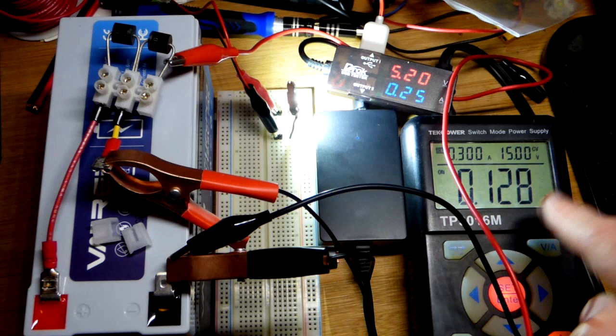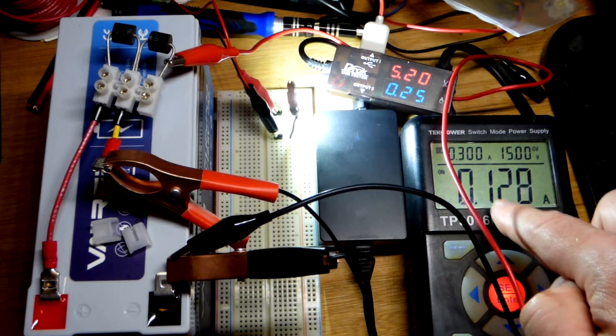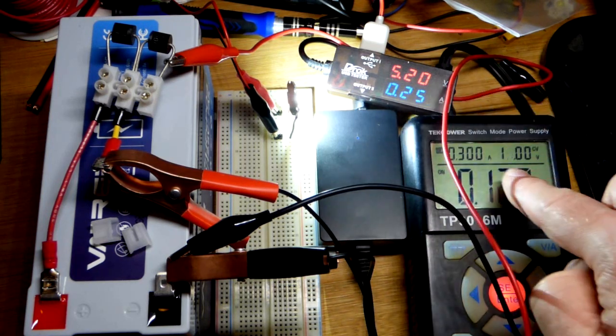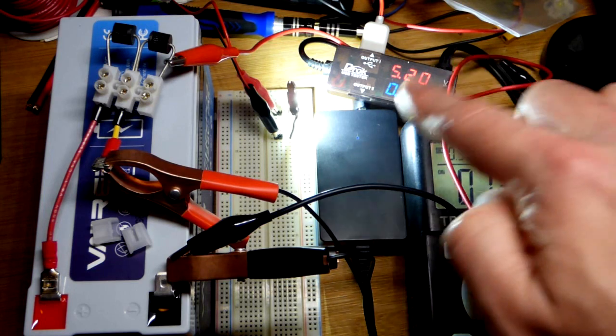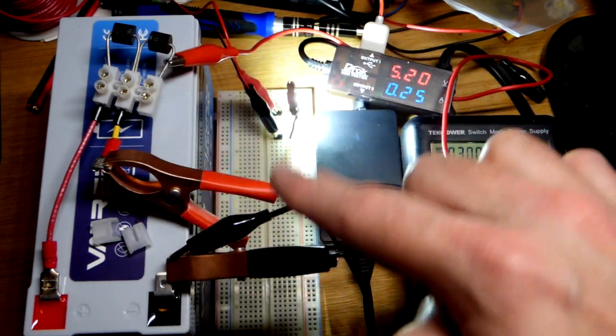Right now this is providing all the power even though you see a lower current at the supply than the output. That is because we have a higher voltage at the input.